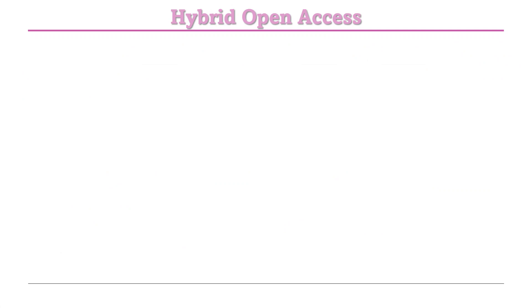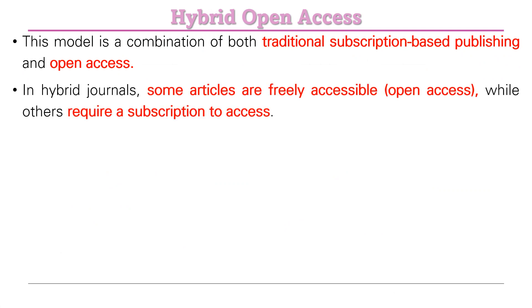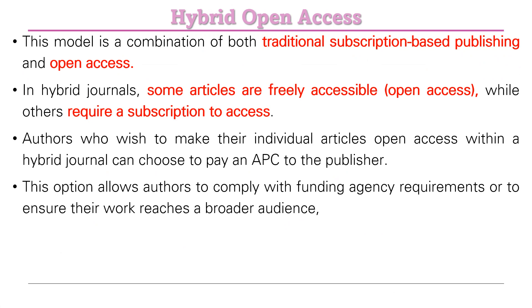Hybrid open access is a combination of traditional subscription-based publishing and open access. In hybrid journals, some articles are freely accessible — where the author pays the APC — while others require a subscription. Authors who wish to make their individual article open access within a hybrid journal pay APC to the publisher. This option allows authors to comply with funding agency requirements or ensure their work reaches a broader audience. However, it has been subject to criticism due to 'double dipping' — having both subscription and APC revenue.